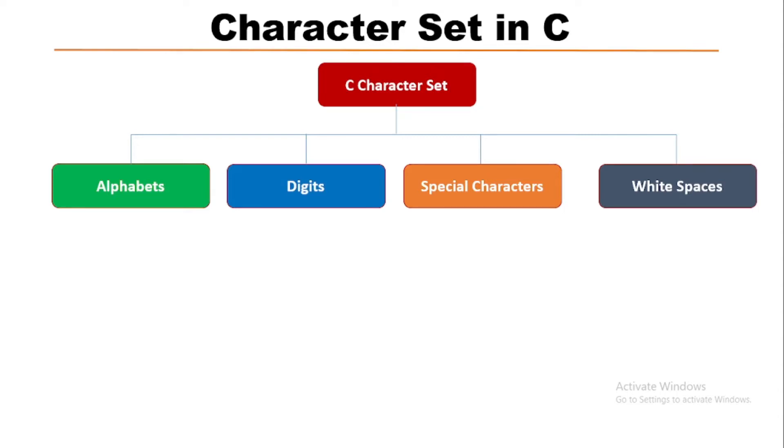C language supports all the alphabets from English language. That means uppercase letters from capital A to Z and lowercase letters from small a to z. Those upper and lowercase letters together support a total of 52 different characters: 26 uppercase and 26 lowercase.